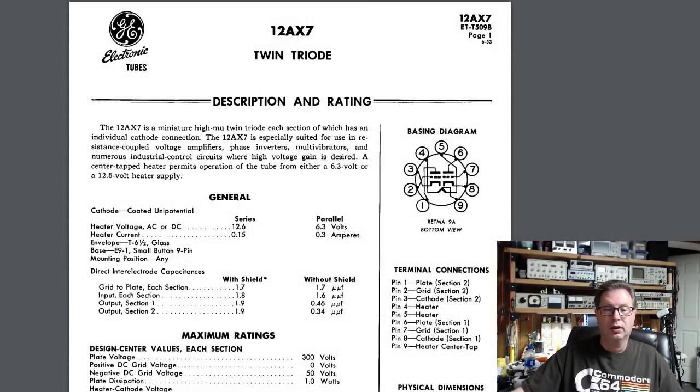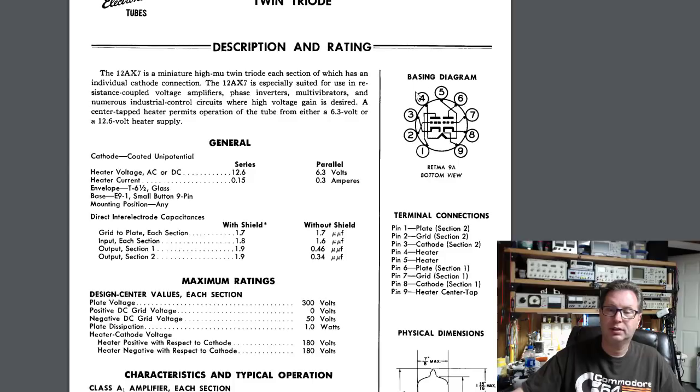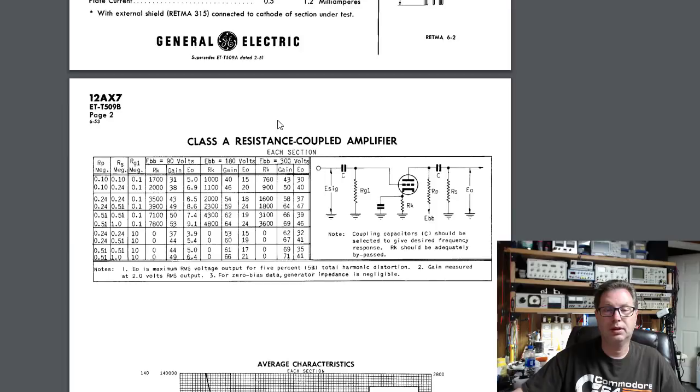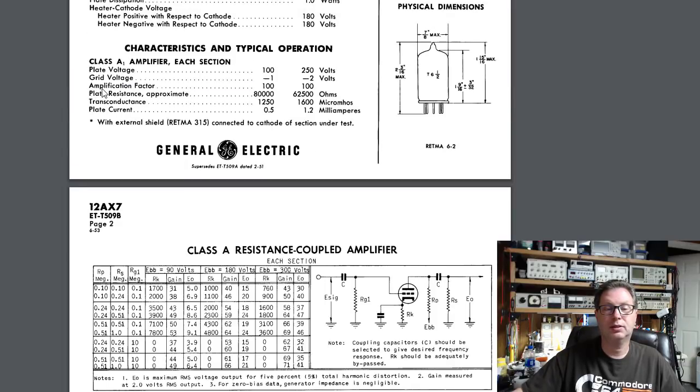We've got the 12AX7 data sheet up here. If you'll notice, it's a nine-pin tube as well, but there's a slight difference. One thing you're going to notice is that you have two ways of operating the filaments or heaters on this tube: you can either run it at 12.6 volts or 6.3 volts. If you scroll down a little bit, here you'll notice class A amplification—amplification factor of 100.